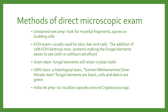The first thing we want to do when we get those samples is a direct microscopic exam. There are a number of different types of stains and wet preps that we can use for that. For example, we can do an unstained wet prep where we're taking a little bit of the sample and putting it in some saline, looking at it on very low light at 40X, looking for mycelial fragments, spores, or budding cells.